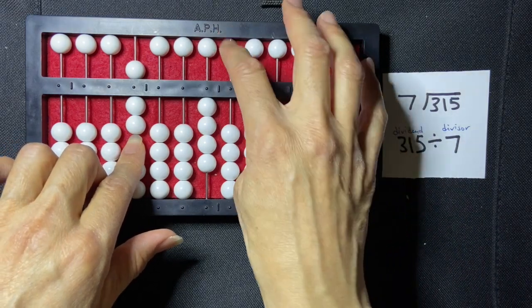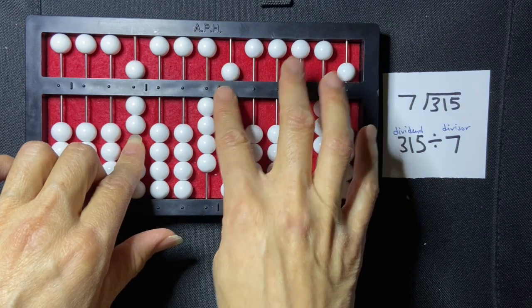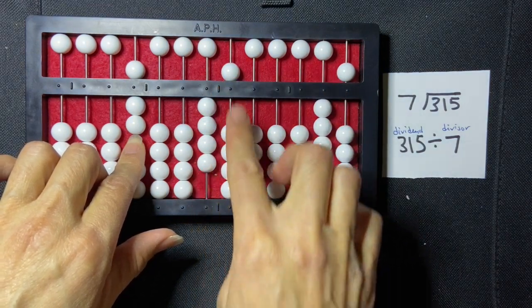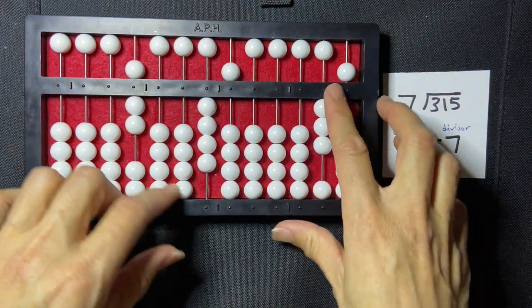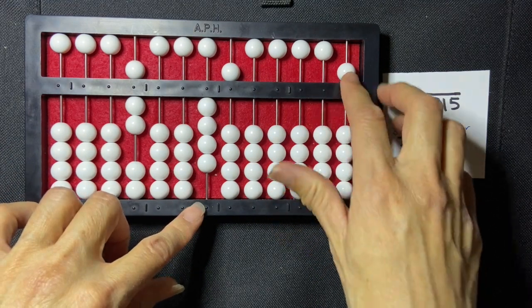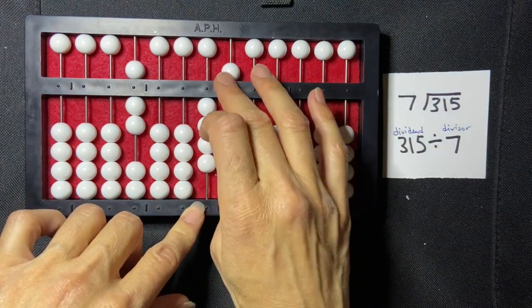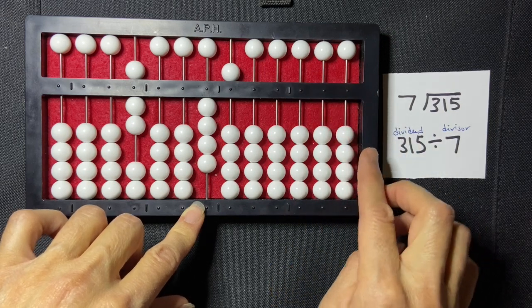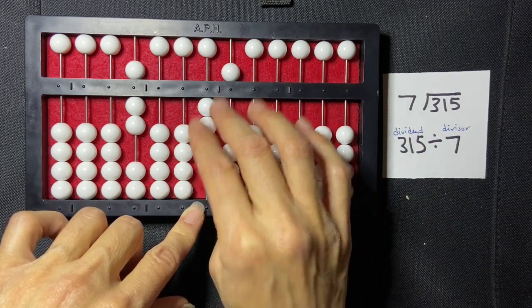7 times 5 is 35, so I'm going to write 5 next to my 4 in my quotient, and I'm going to subtract 30 and 5. And that gives me my quotient, which is 45. So 315 divided by 7 is 45.